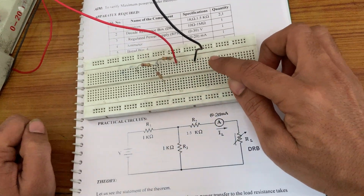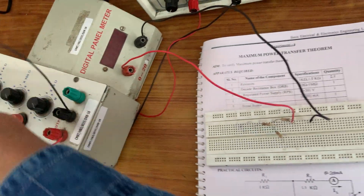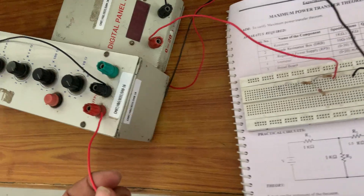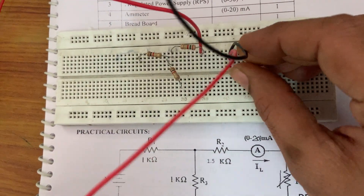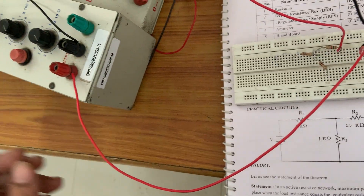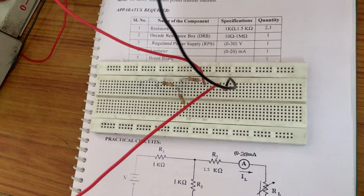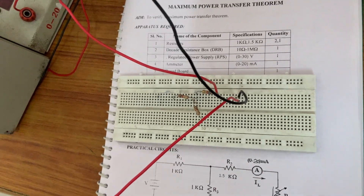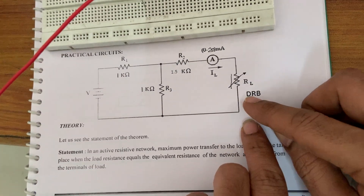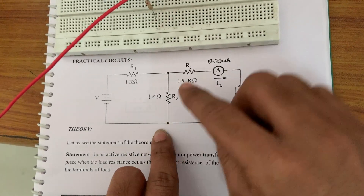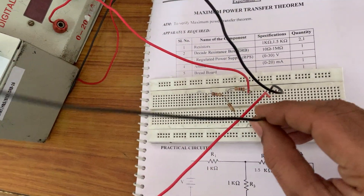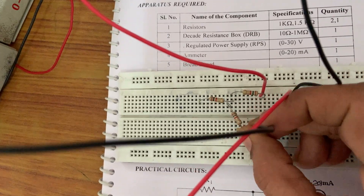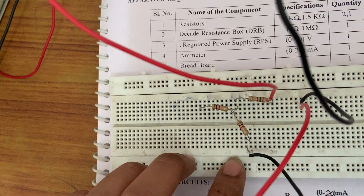For the load I am using the DRB box. The DRB box positive is connected to the ammeter negative. The DRB box negative is connected to the second end of the 1 kilo ohm resistor. Connect DRB negative to that 1 kilo ohm second end vertically on the same place.